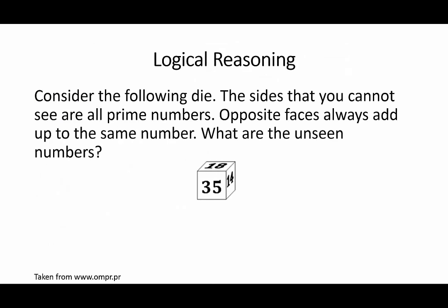Let us look at the following one. Consider this die. The sides that you cannot see are all prime numbers. Opposite faces always add up to the same number. What are the unseen numbers?